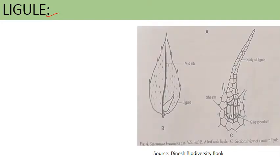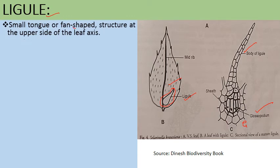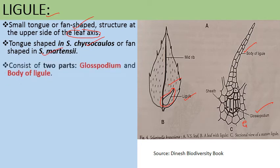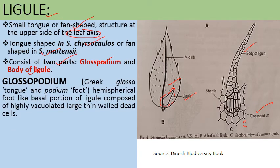The ligule is a tongue-shaped or fan-shaped structure present at the base of each leaf in Selaginella. It consists of two parts: the glossopodium — from Greek glossa (tongue) and podium (foot) — and the body of the ligule. It is tongue-shaped in Selaginella chrysocaulos or fan-shaped in Selaginella martensii. The glossopodium is the hemispherical, foot-like basal portion of the ligule, composed of highly vacuolated, large, thin-walled dead cells, enclosed by a cup-shaped glossopodium sheath.